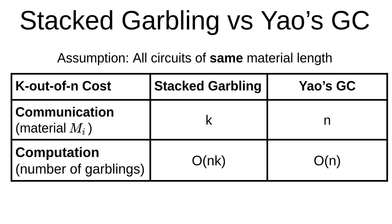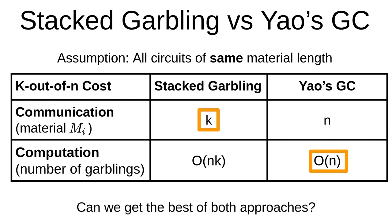This trade-off forces us to choose between communication and computation, which is undesirable. This is the key problem we are trying to solve. More specifically, we ask whether we can have the best of both worlds — can we pay communication only for k materials and still incur computation on the order of n? We answer in the affirmative and match the communication complexity of stack garbling and the computation complexity of standard garbled circuit.